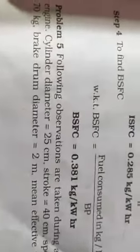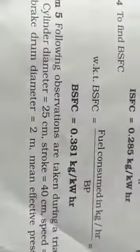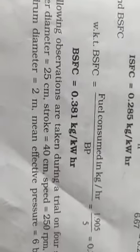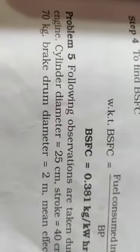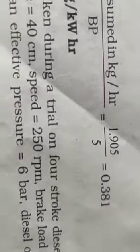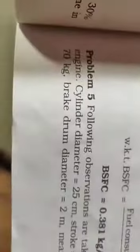Hello friends, now let us look at numerical problem 5 on IC engines. The following observations are taken during a trial on a four-stroke diesel engine: cylinder diameter 25 centimeters, stroke 40 centimeters, speed 250 rpm, brake load 70 kg.